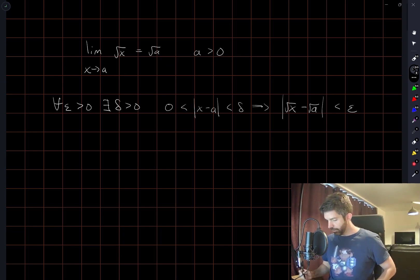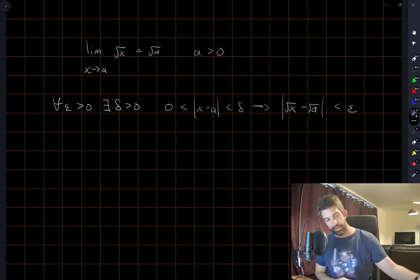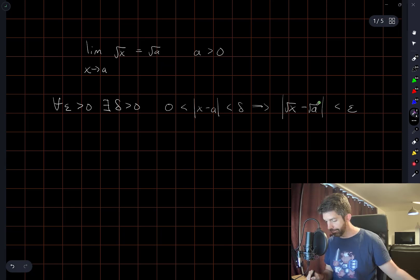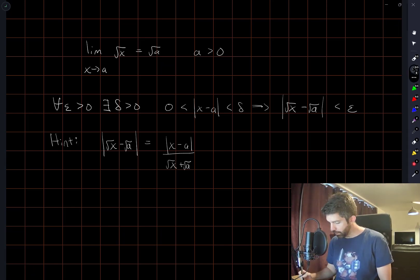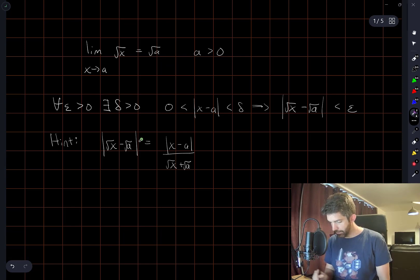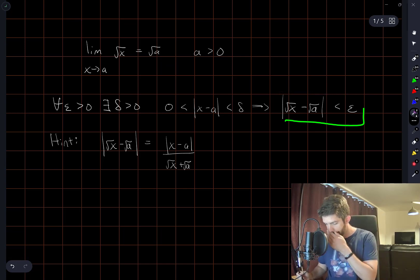By writing this statement out, the first thing I see is that the hint we're given is kind of rearing its head. We're given a hint — this is the hint we're given — and this expression that appears in the hint is kind of part of the thing that we need to prove being less than epsilon.